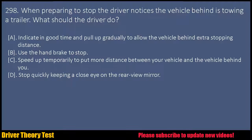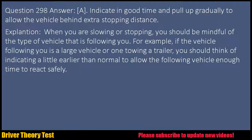Question 298: When preparing to stop the driver notices the vehicle behind is towing a trailer. What should the driver do? a. Indicate in good time and pull up gradually to allow the vehicle behind extra stopping distance. b. Use the handbrake to stop. c. Speed up temporarily to put more distance between your vehicle and the vehicle behind you. d. Stop quickly keeping a close eye on the rearview mirror. Question 298 Answer: A. Indicate in good time and pull up gradually to allow the vehicle behind extra stopping distance.